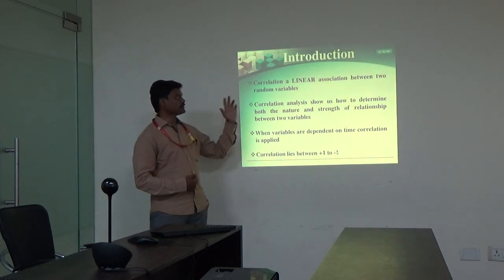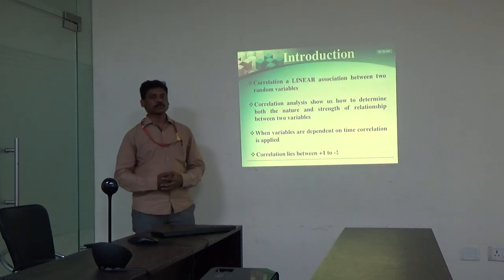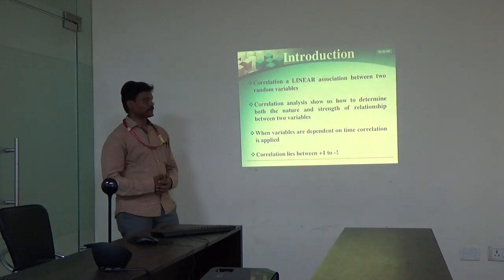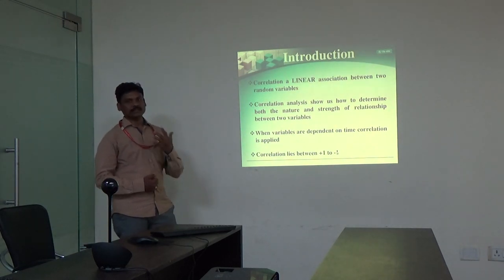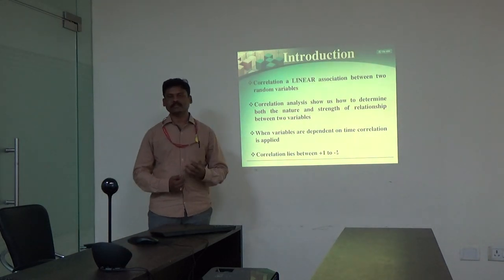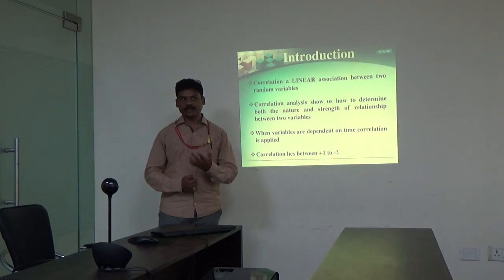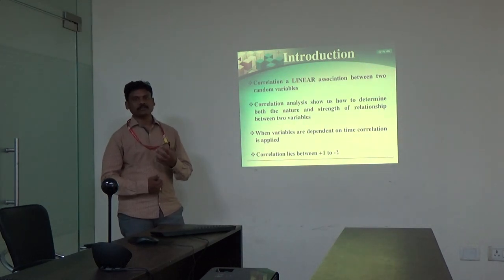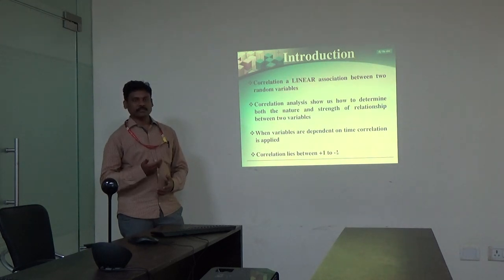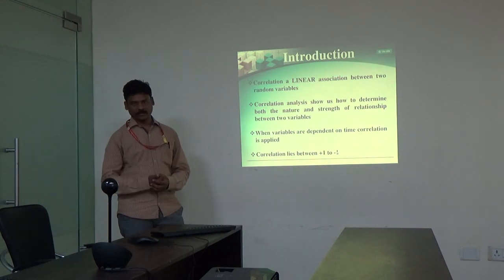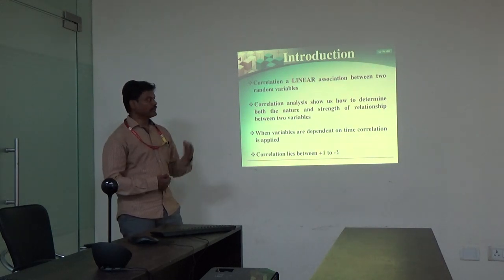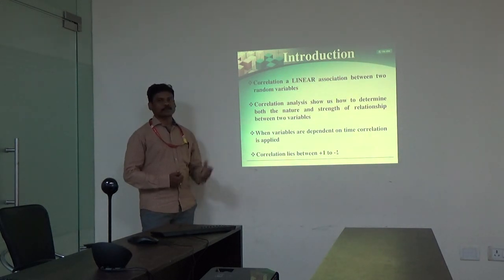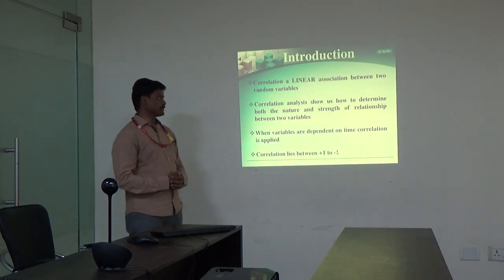Correlation is defined as a linear association between two random variables. It is expected that the variables in the data set are independent of each other, yet there is a degree of dependence between them. The dependence may be very high, dependence may be low, or dependence may not be there at all. We will try to understand that by looking at the output of correlation analysis.